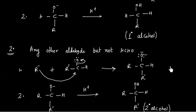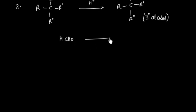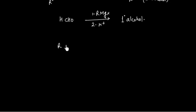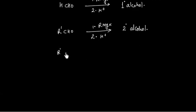To summarize: formaldehyde treated with Grignard reagent and then hydrolyzed gives a 1° alcohol. An aldehyde (but not formaldehyde) treated with RMgX Grignard reagent and then acidified with dilute acid gives a 2° alcohol. A ketone treated with Grignard reagent and then acidified gives a 3° alcohol.